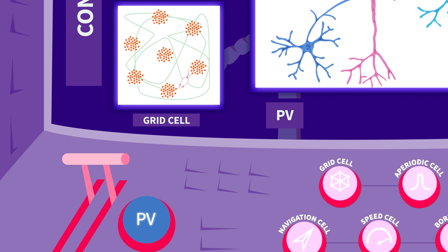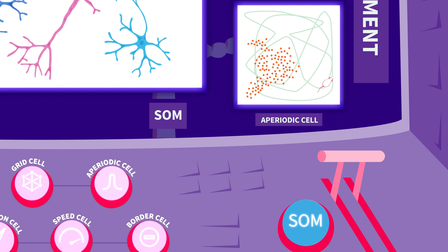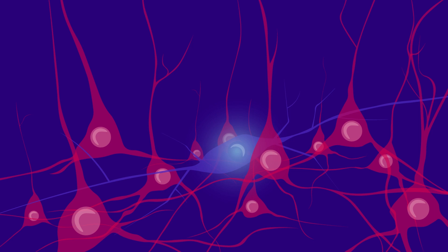From these experiments, we learned that parvalbumin interneurons control the grid cells, while somatostatin interneurons modulate aperiodic cells. There was no recorded overlap between the two.